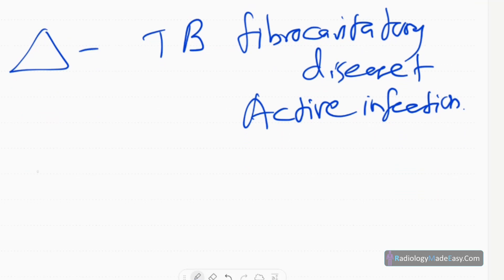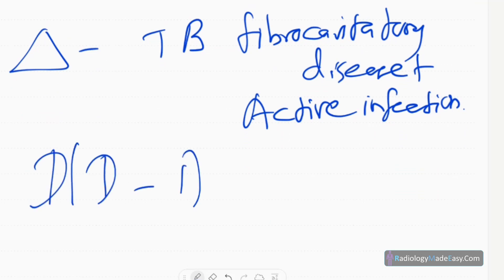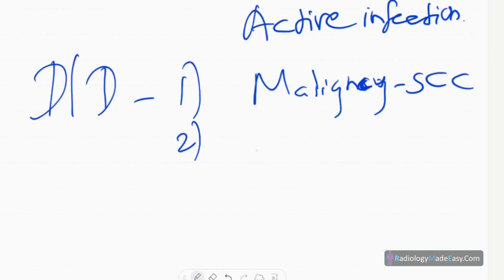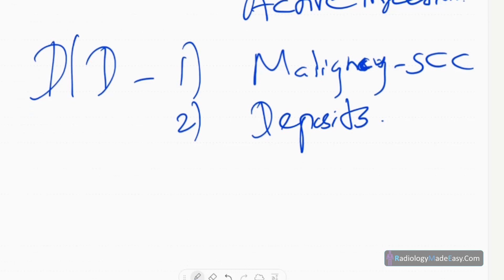The differential diagnosis for this kind of presentation includes malignancy — lung carcinoma, especially squamous cell carcinoma type, can present like this. Secondary deposits from squamous cell carcinoma can also present as multiple cavitations.